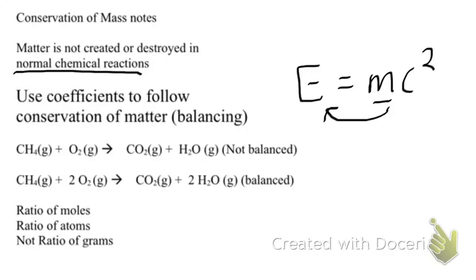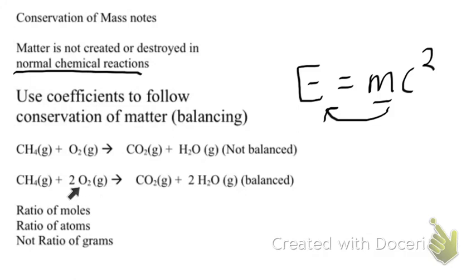The way we correct this is by putting a coefficient in front of the oxygens, giving us four oxygens on one side, and by putting a two in front of our water molecule, giving us two more oxygens there. Now we have four oxygens on each side. This has also balanced our hydrogens — we now have four hydrogens on each side to match the four hydrogens on the reactant side.